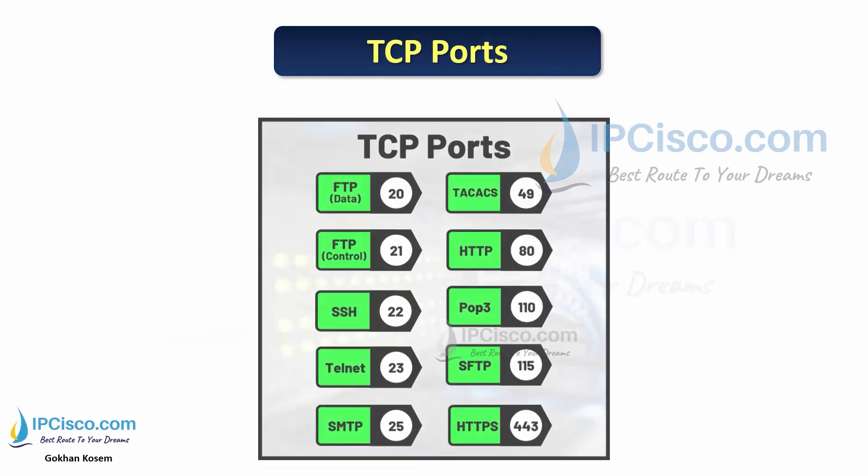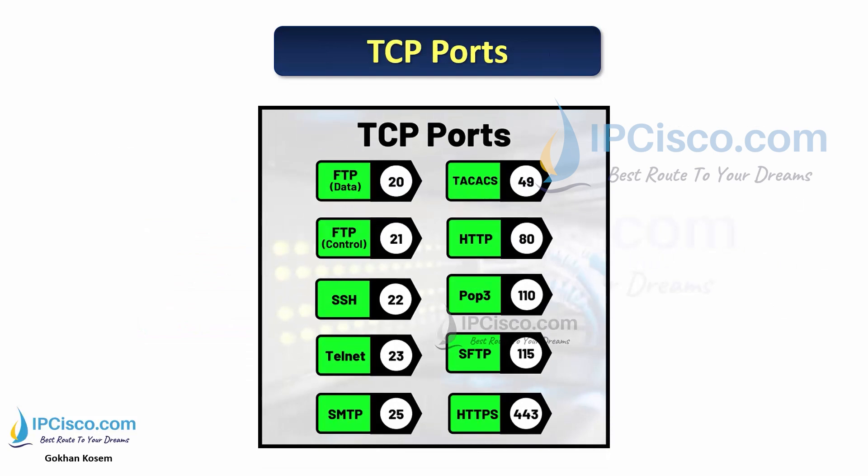What about TCP ports? Here are some application protocols that use TCP ports. FTP uses TCP ports 20 and 21. SSH uses TCP port 22. Telnet uses port 23. SMTP uses port 25. TACACS uses port 49. HTTP uses port 80. POP3 uses port 110. SFTP uses port 115. And HTTPS uses TCP port 443.